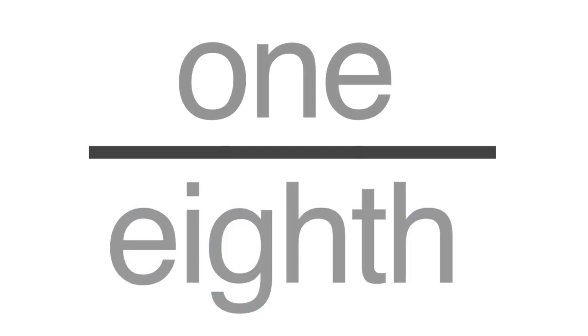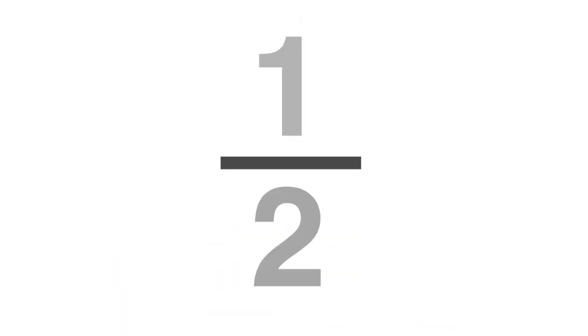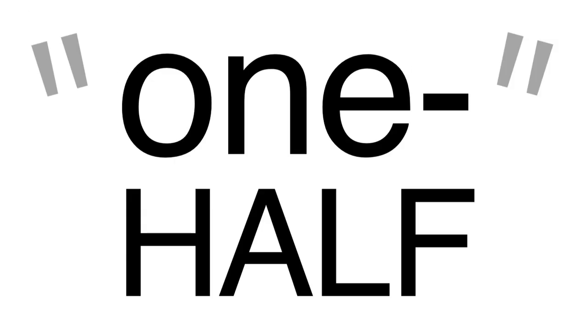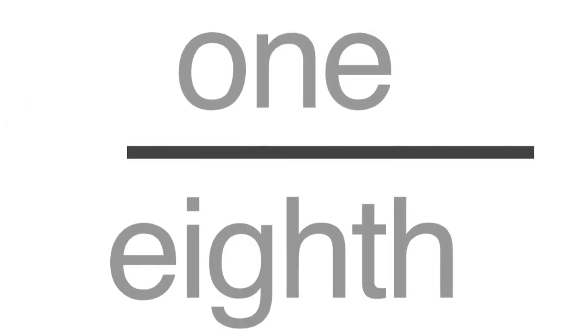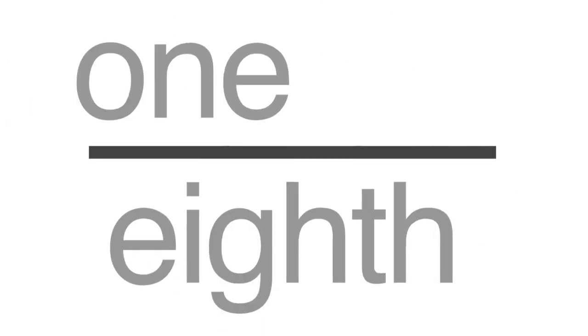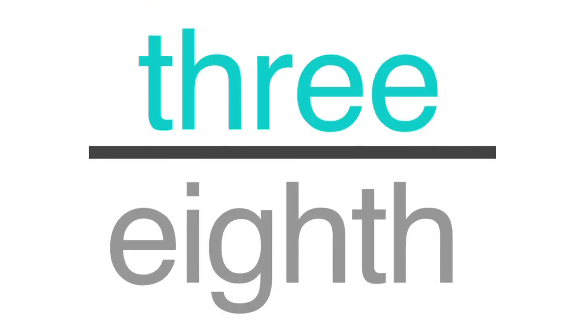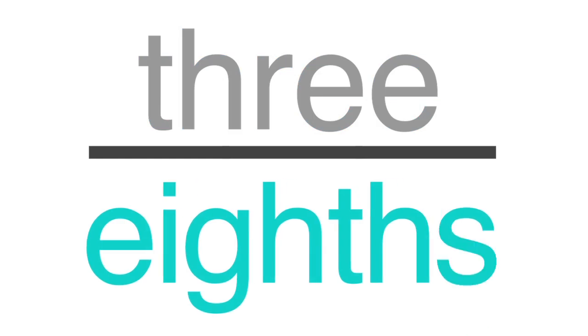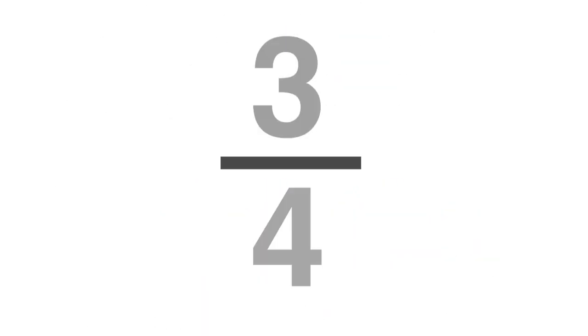For example, one over two is read one-half. If the numerator is more than one, then the denominator is plural. For example, three over four is read three-fourths.